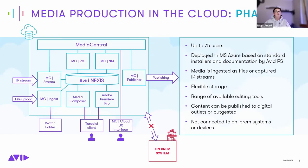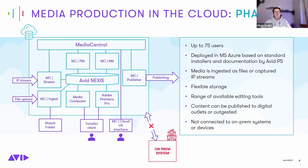Those three phases are extremely important for us to reach a full cloud-native solution. At the heart of the phase one solution is a Nexus fast system running on Azure storage, preserving the workflow and capabilities you're used to but in the cloud. The workflow enables stream and file ingest, full production using Media Central and Media Composer, as well as file distribution by exports or publication through Media Central Publisher. Notably, there are no connections to on-premises systems — this is very much an island production system in the cloud.